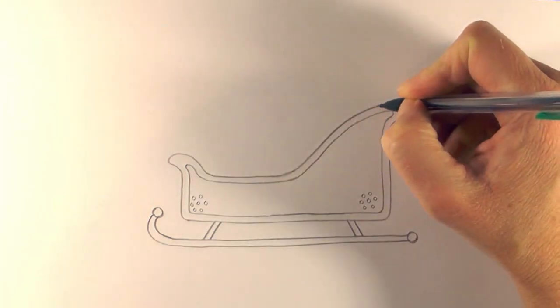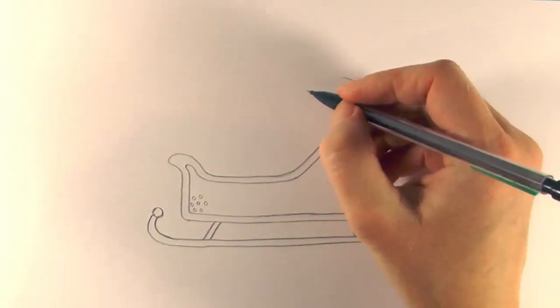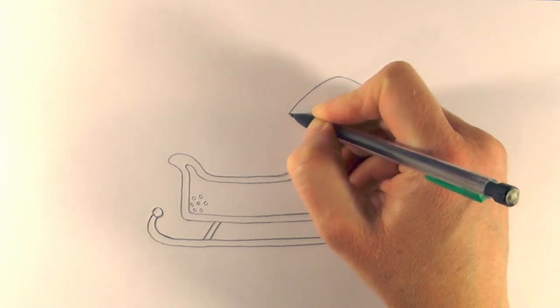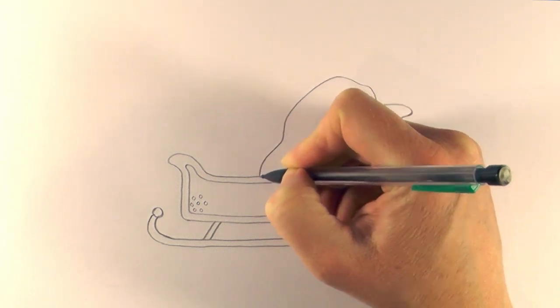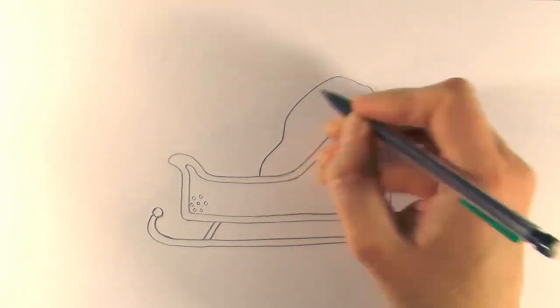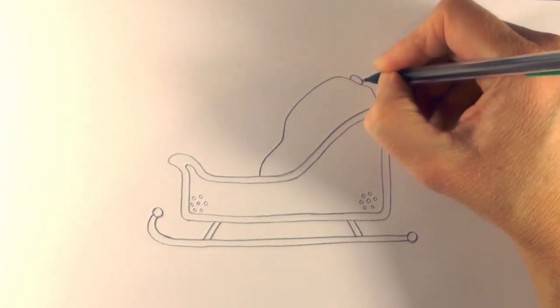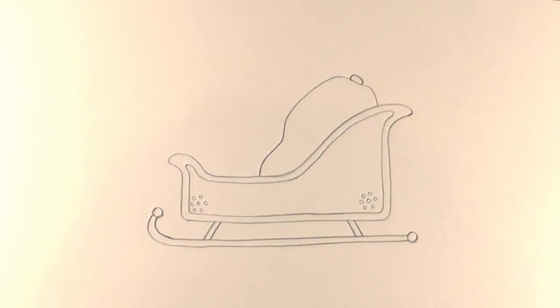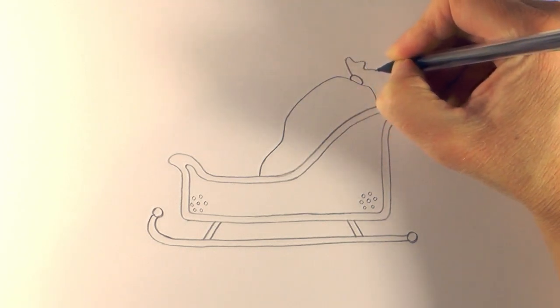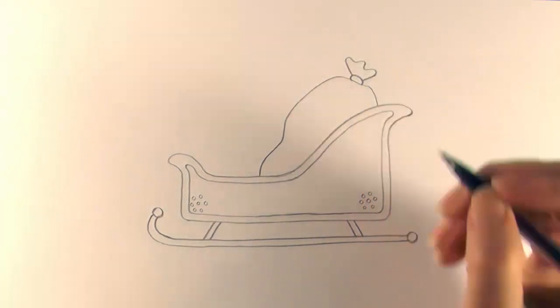And then we come up, bring a line up and then across like that. We're going to draw Santa's sack of toys now, a sack of presents. And then come down, just make a little bit of a wave there just to give it a little bit of detail. Then we draw almost like an oval at the top and then take a line out and then do a little wave form across the top and then a line back down like that.